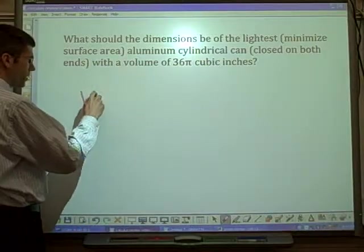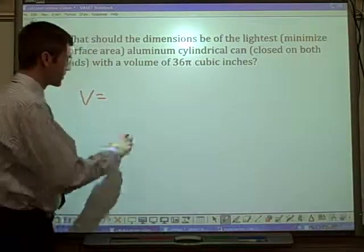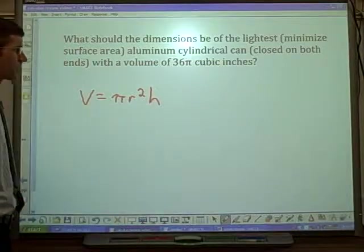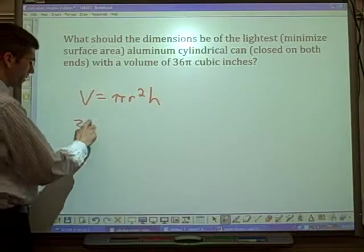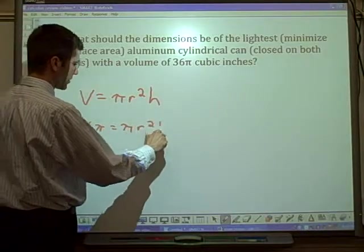The volume of a can, whether it's closed on both ends or not, is πr²h. It's convenient that there is a π with the volume. 36π equals πr²h.